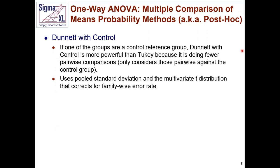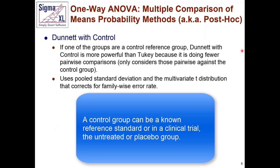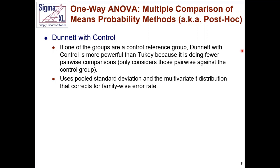Dunnett is the third choice we've added. If you have a control group — a gold standard or reference standard — and you want to compare against it in your ANOVA, you would use Dunnett with control. That reduces the number of comparisons since you're not doing all pairwise; you're only comparing against the control. This makes it more powerful than Tukey because you're doing fewer comparisons.